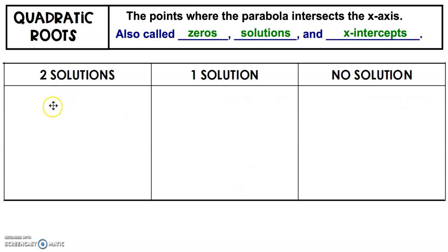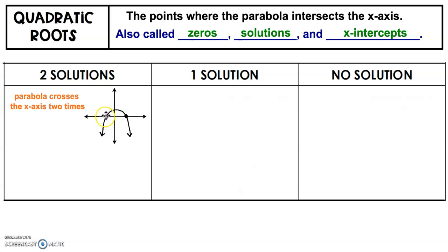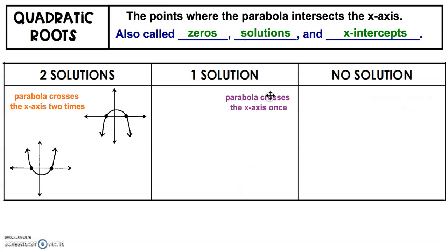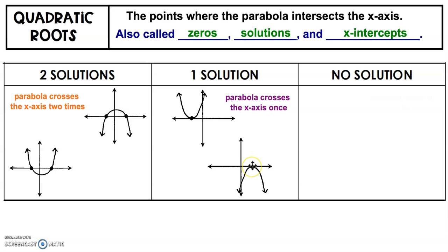We have different scenarios when dealing with parabolas. We can have two solutions where the parabola crosses the x-axis twice — whether pointing down or up. If we have one solution, the parabola only crosses the x-axis once. Notice that when we have one solution, the vertex is the root — it's the one point that hits the x-axis.